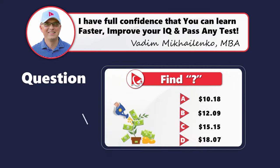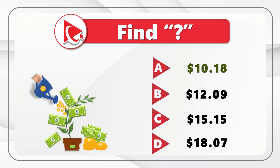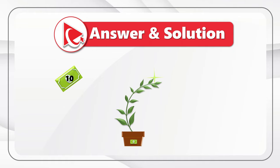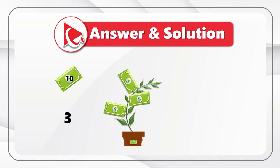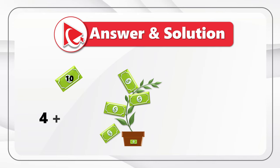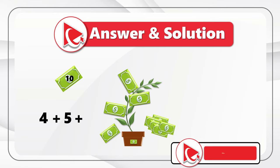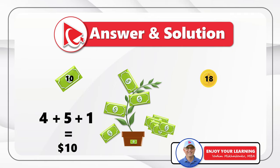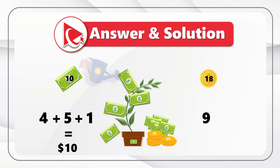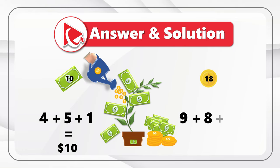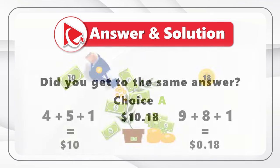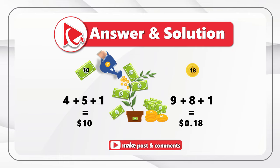I think the correct answer is Choice A: $10.18. I counted $10 in the picture. Starting at the top of the money tree: 1, 2, 3, 4 bills. Then on the right, we see another group of dollar bills — there are $5 there: 1, 2, 3, 4, 5. And then we see the hard-to-notice dollar bill on top of the flower pot. Now let's count the coins: 9 coins to the right of the flower, 8 coins coming out of the watering can, and 1 coin on top of the watering can which is easy to miss. Did you get the same answer — Choice A, $10.18? Please post any coins or dollar bills I missed in comments.